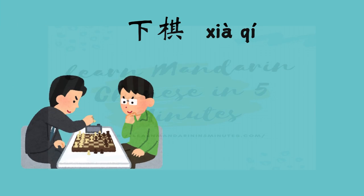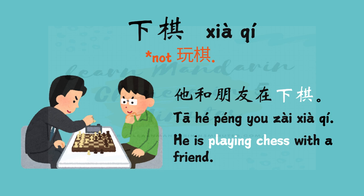Do you like playing chess? Play chess in Chinese is 下棋. You cannot say 玩棋, although 玩 also means play in Chinese. Sentence example: 她和朋友在下棋 — he's playing chess with a friend. If you want to say I like playing chess, you can say 我喜欢下棋.